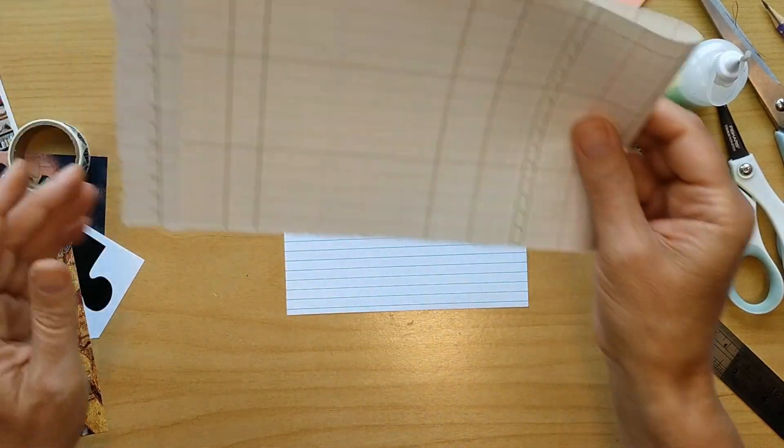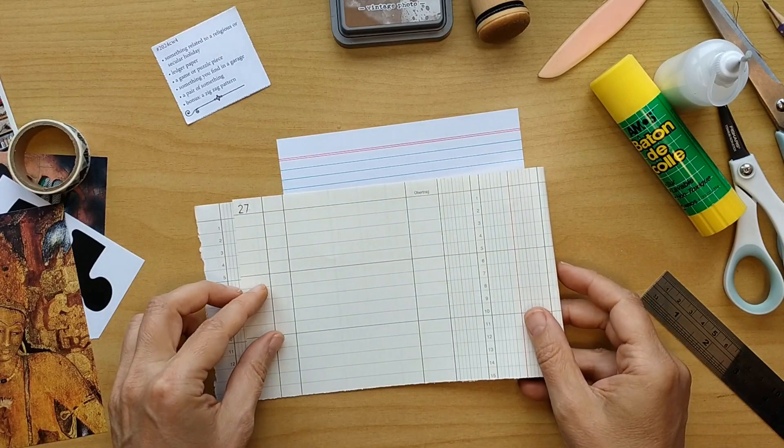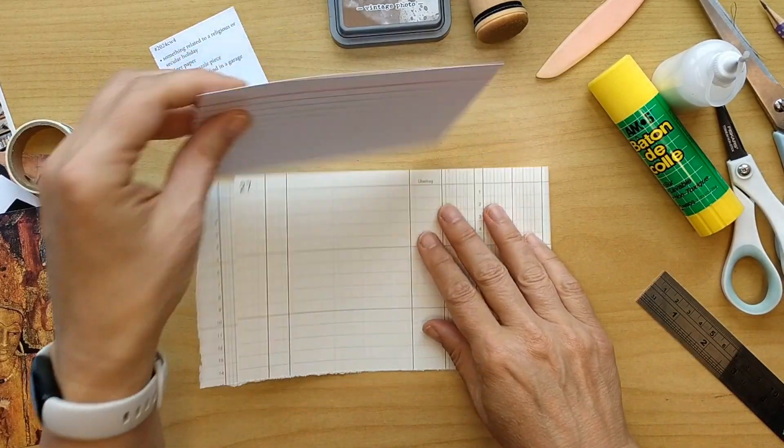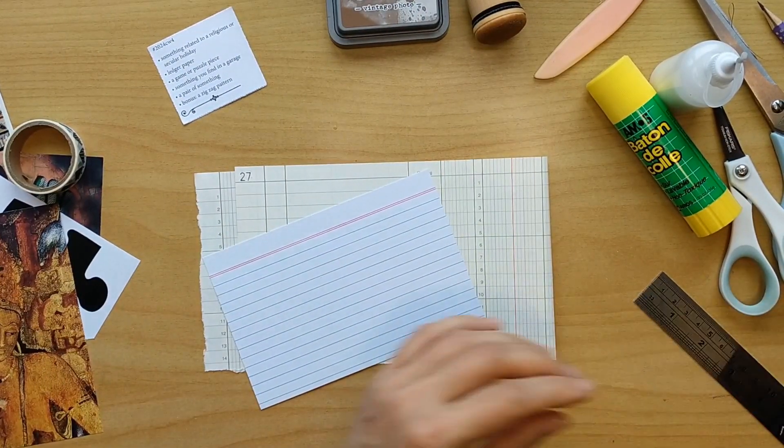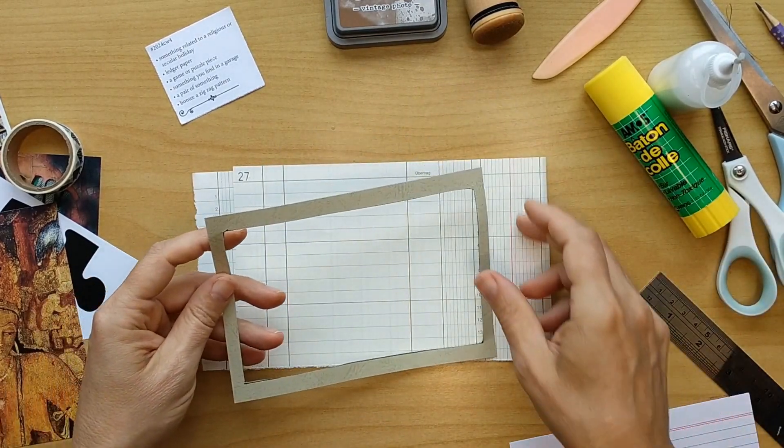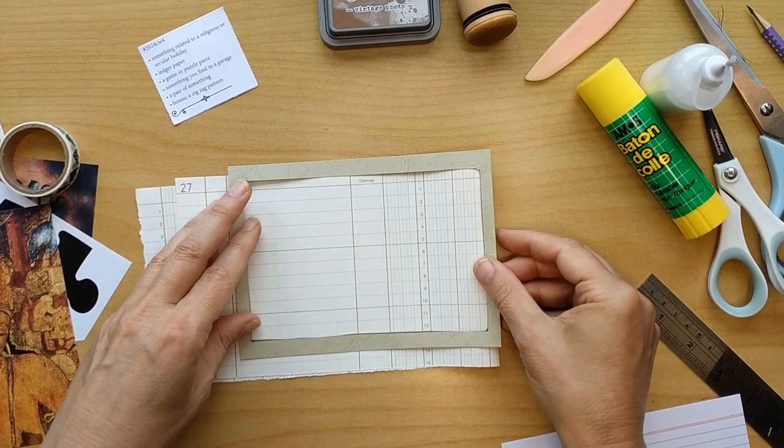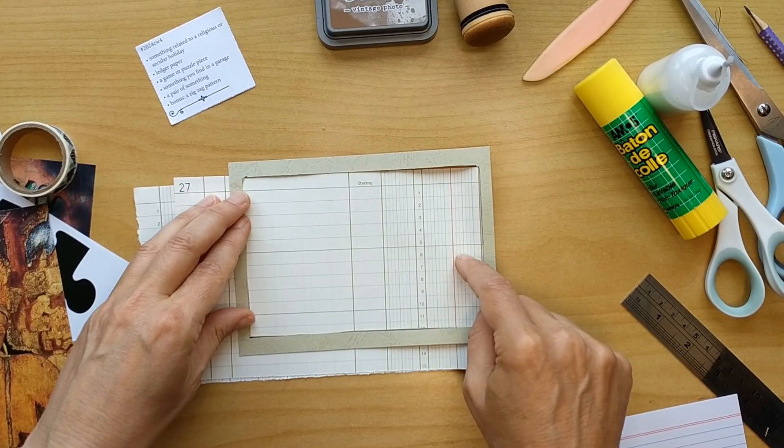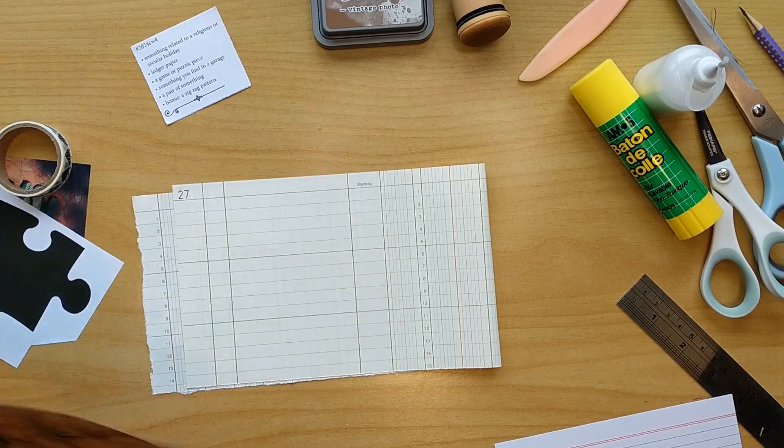My initial phase is always using all the different prompts. Here I have the ledger paper and maybe you can remember that in week two I created a little frame for myself. This frame allows me because it's the same size like the postcard to have a little preview of the different sections and see how it looks.